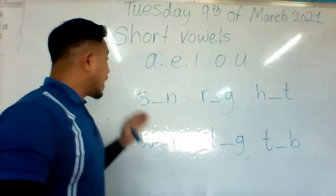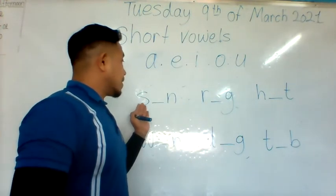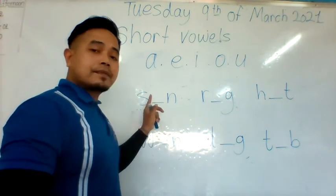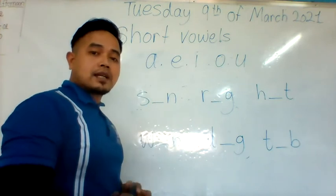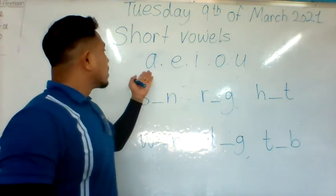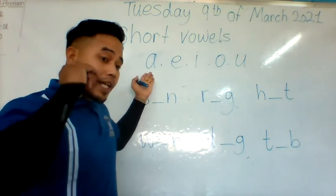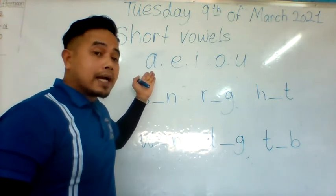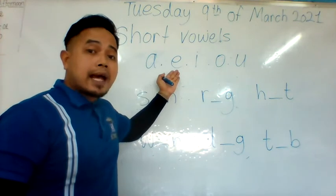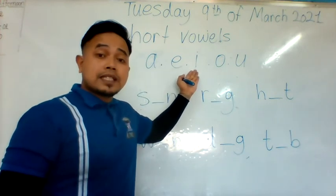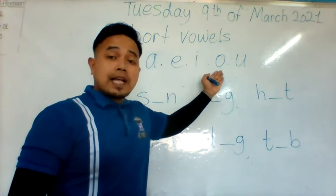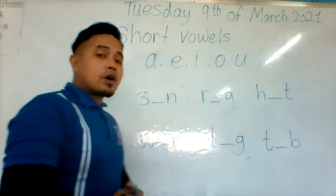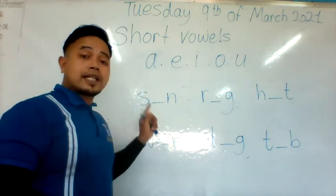Now I am going to say the sound in between the words and you identify which short vowel will be in the middle of these consonants. Let's go over the sounds again to clarify. This sound makes 'ah', this sound makes 'eh', this sound makes 'e', this sound makes 'oh', this sound makes 'uh'.